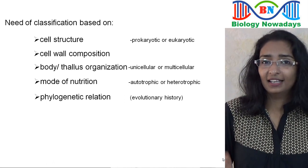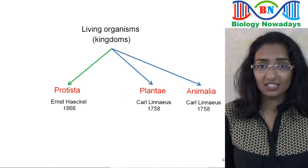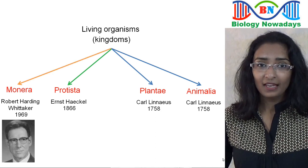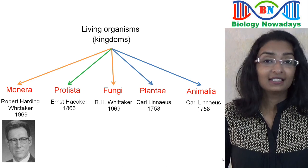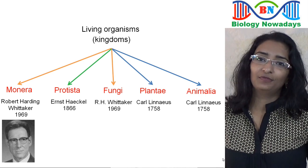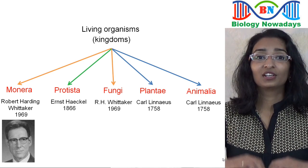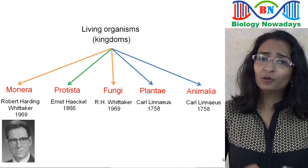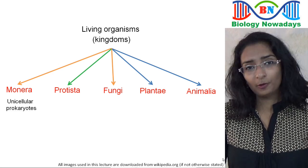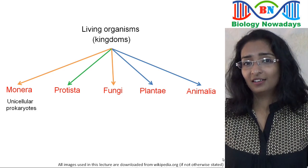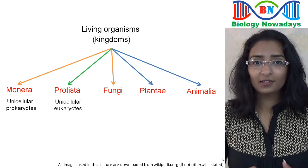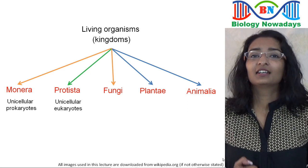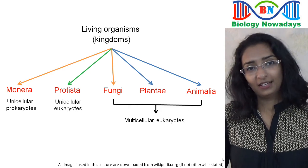In 1969, Robert Harding Whittaker added two more kingdoms — kingdom Monera and kingdom Fungi — and proposed a five-kingdom classification considering all these criteria. Kingdom Monera consisted of unicellular prokaryotes, kingdom Protista consisted of unicellular eukaryotes, while kingdoms Fungi, Plantae, and Animalia consisted of multicellular eukaryotes.